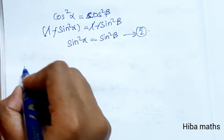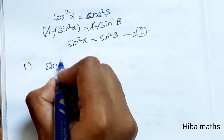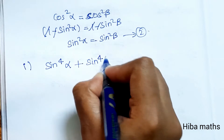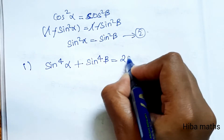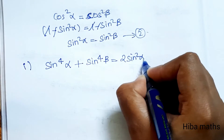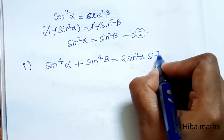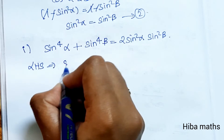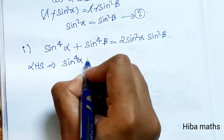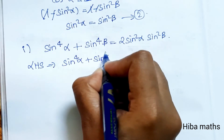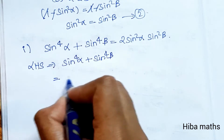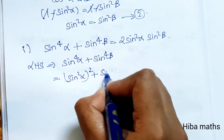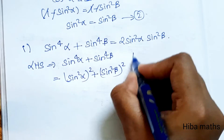Also, since sin²α = 1 − cos²α = 1 − cos²β = sin²β. This is result 2. Now let's prove the first subdivision: sin⁴α + sin⁴β = 2·sin²α·sin²β. LHS = sin⁴α + sin⁴β = (sin²α)² + (sin²β)².